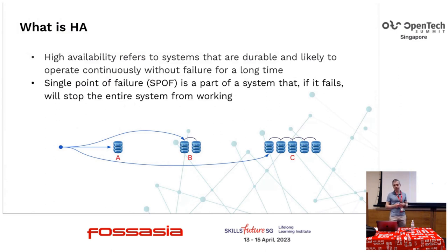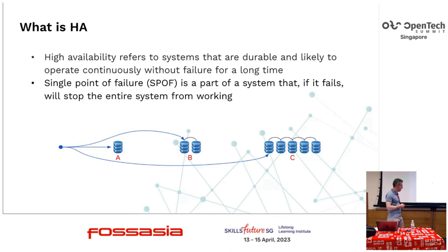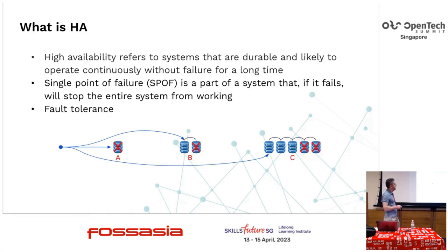High availability usually refers to systems that are durable and are likely to operate without a failure for a long time. If we take a look at system A on this diagram, there is an application connecting to a database. If this database fails, then the entire system fails, meaning system A doesn't have any fault tolerance.